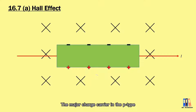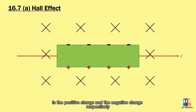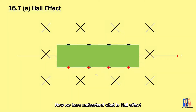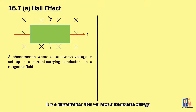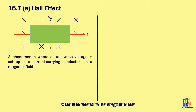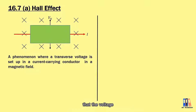The major charge carriers in p-type and n-type semiconductors are the positive charge and the negative charge respectively. So now we understand what the Hall effect is. It is a phenomenon where a transverse voltage appears in a current-carrying conductor when it is placed in a magnetic field. The word 'transverse' here means the voltage is perpendicular to the direction of current flow, as opposed to longitudinal.